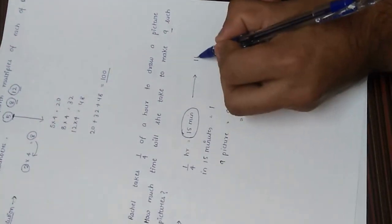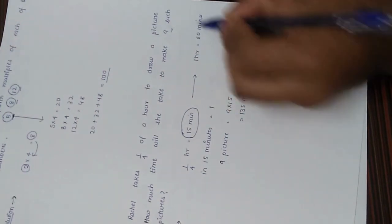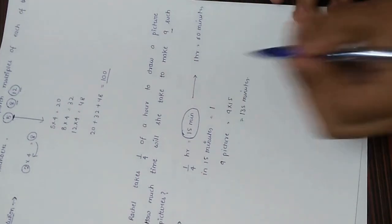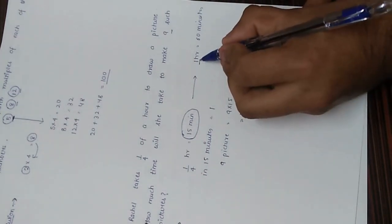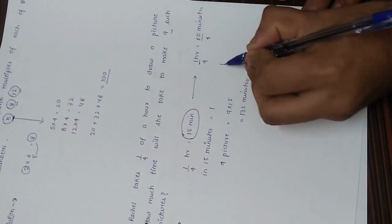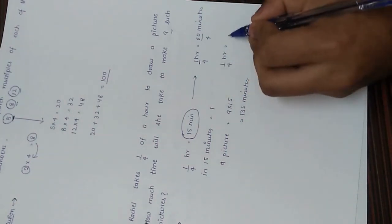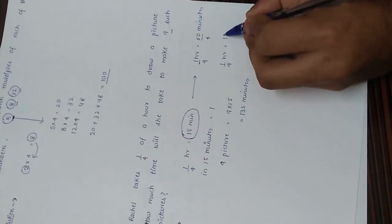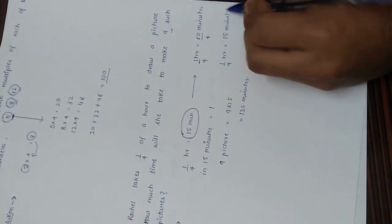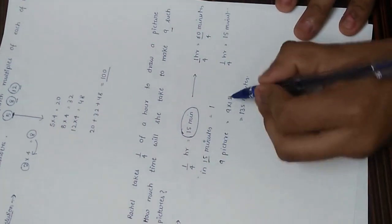How did we get 15 minutes? We know one hour equals 60 minutes. Dividing both sides by 4, one-fourth of an hour equals 15 minutes. That is how we arrive at 15 minutes, and then the rest is straightforward.